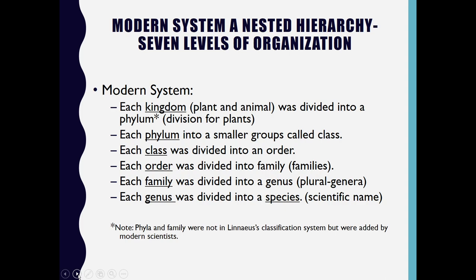In the modern system, each Kingdom — whether plant or animal — is divided into Phylum, each Phylum is divided into smaller groups called Class, each Class is divided into an Order, each Order is divided into a Family, each Family is divided into a Genus, and each Genus is divided into a Species, which gives the scientific name of the organism.